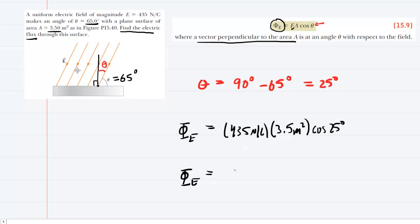When you multiply this out, you should get about 1380. The unit will be newtons times meters squared per coulomb, as you can see in the setup. This is the correct answer to the question.